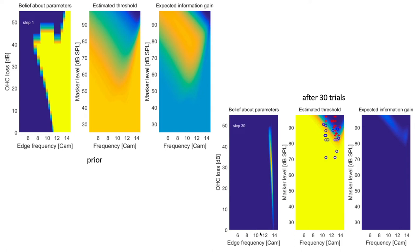The choice of a prior bears some ethical considerations. We could choose an informative prior and reduce average testing time further, but this could disadvantage those with an uncommon hearing loss. For scientific experiments, we prefer a uniform prior because it does not introduce any bias. For clinical tests, we need to make sure that outliers can still be tested within a reasonable testing time, so we must not make a rare hearing loss too unlikely in our prior, even if healthcare systems mainly care about average testing time. The middle panel gives our current belief about expected detection probabilities integrated across model probabilities, and the right panel shows the mutual information. After 30 steps, we are quite confident that the edge frequency is around 13 cam, which is around 700 Hz.